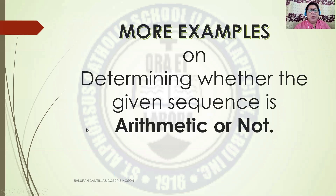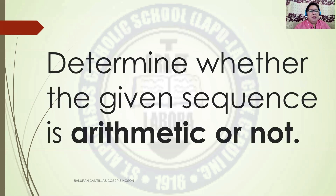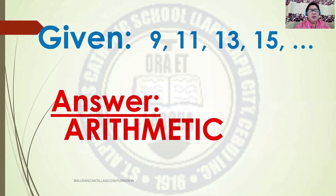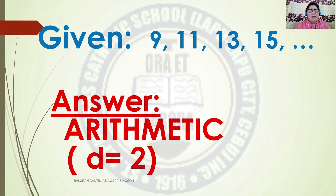Let us have more examples on determining whether the given sequence is arithmetic or not. Number 1: 9, 11, 13, and 15. The answer is Arithmetic, because there is a Common Difference of 2.